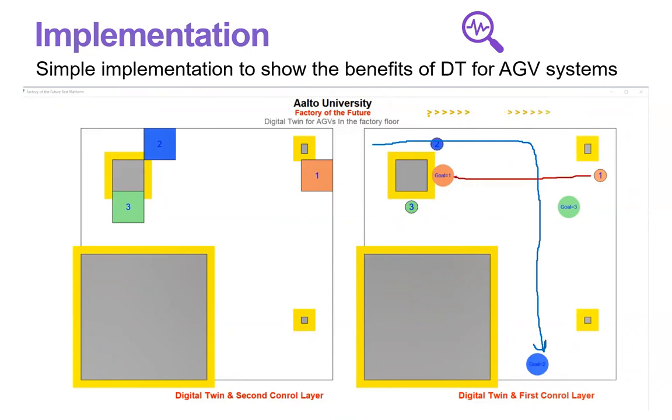And this red line is a path for AGV number one toward its destination. And also we have a similar green arrow for AGV number three.